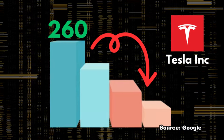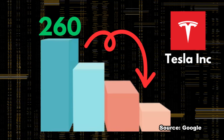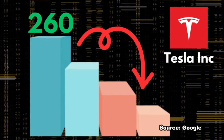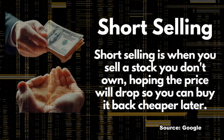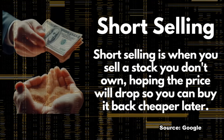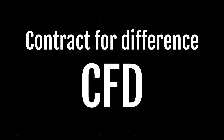Say, for example, you have Tesla shares at $260, and every time you see it touches $260, price will come down, and you saw that this could be an opportunity to short Tesla, but not wanting to sell your Tesla shares — then what can you do about it? You might want to consider contract for difference, CFD.